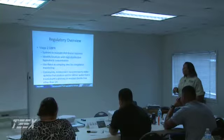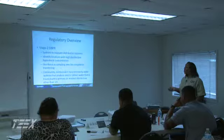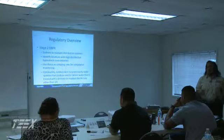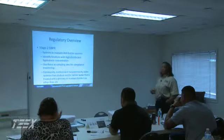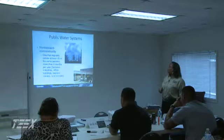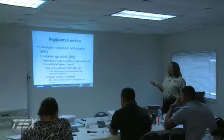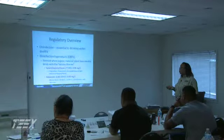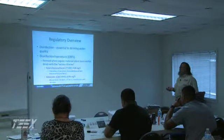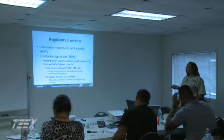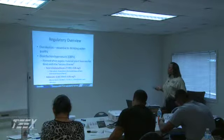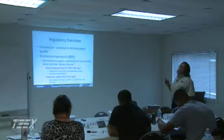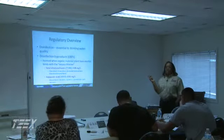The rule applies to community and non-transient non-community water systems that produce or deliver water treated with primary or residual disinfection — applicable to those systems if you did not use UV, because UV does not produce the byproducts. It's a physical and not a chemical process. Disinfection is essential to drinking water. The byproducts form when organic material — plant-based mostly — binds with excess chlorine. When we're talking total trihalomethanes, we're talking chloroform, bromoform, bromodichloromethane, and dibromochloromethane — all the species.